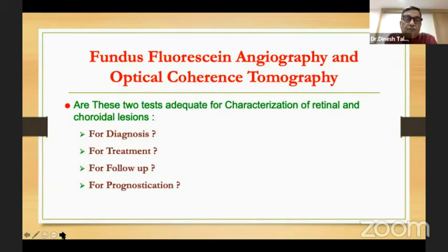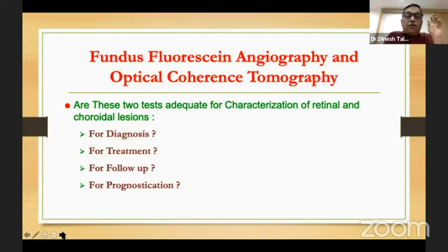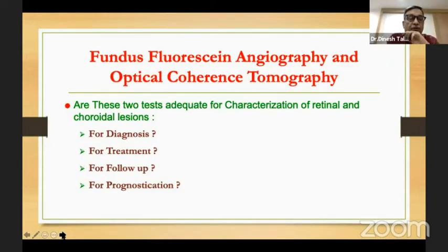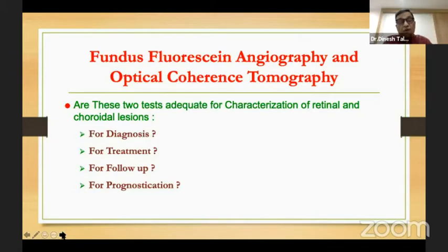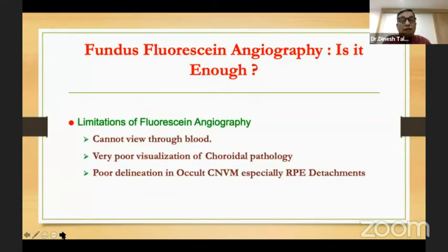So far, we've talked about fluorescein angiography, and of course we don't need to talk about optical coherence tomography — it's there all over the place. Are these two tests adequate for characterization of retinal and choroidal lesions, for diagnosis, for treatment, for follow-up, and for prognostication? Let's see.